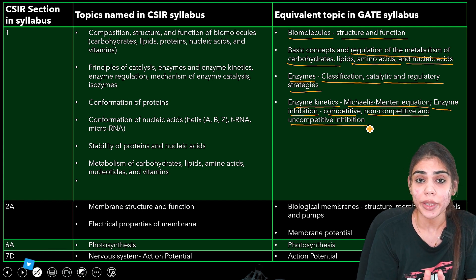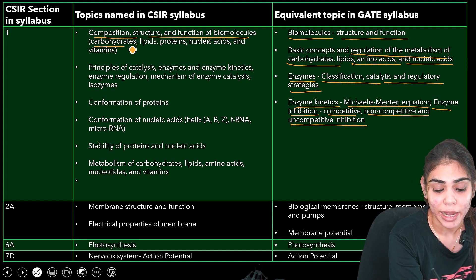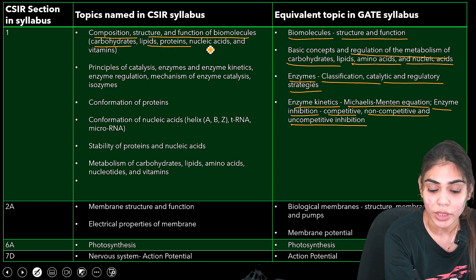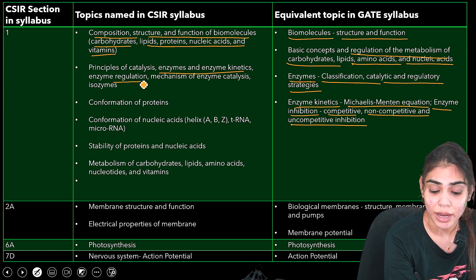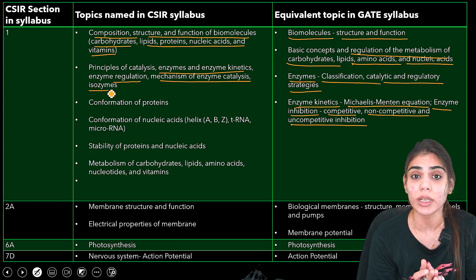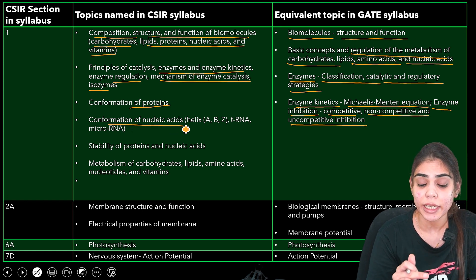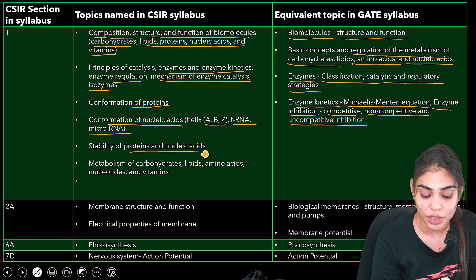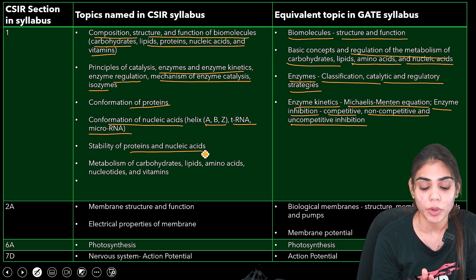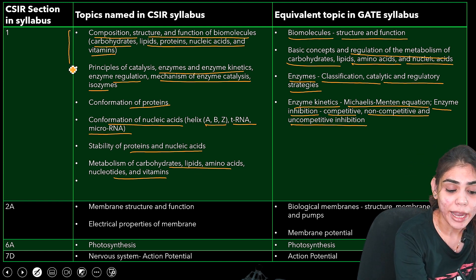The equivalent topics in the CSIR syllabus are composition, structure and function of biomolecules — carbohydrates, lipids, proteins, nucleic acids, and vitamins — principles of catalysis such as enzyme and enzyme kinetics, enzyme regulation, and mechanism of enzyme catalysis, where you have to learn about isozymes as well as confirmation of proteins and nucleic acids. You have to learn about A, B, and Z conformations of DNA, what is tRNA as well as microRNA, and the stability of proteins as well as nucleic acids.